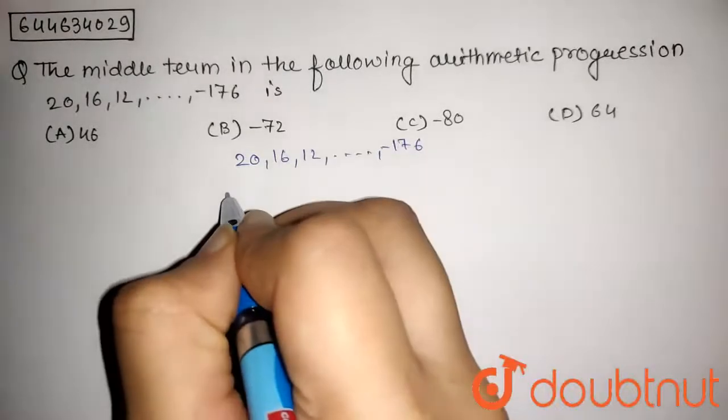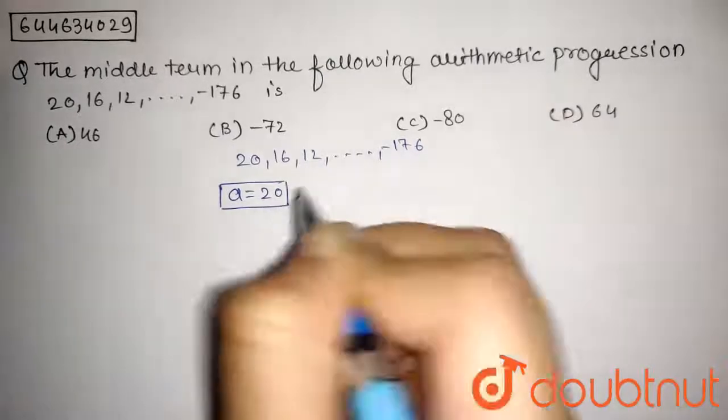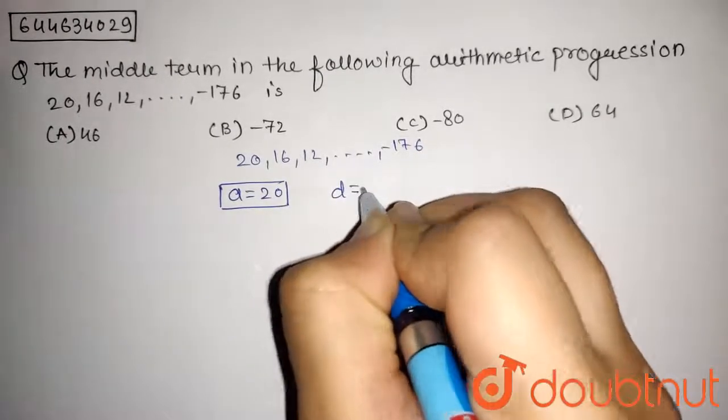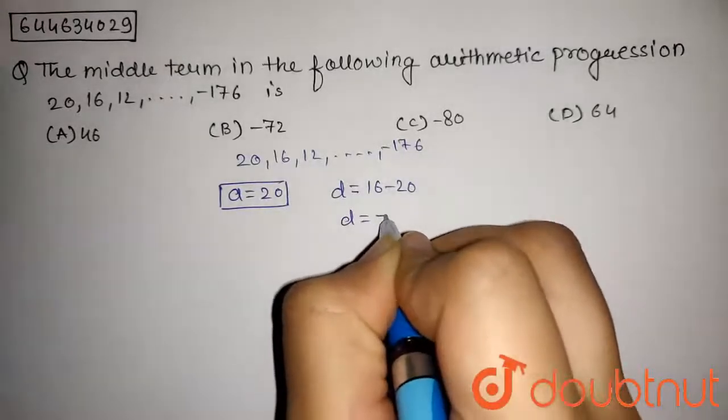Now from this AP we can write that a, the first term, is equal to 20. d, the common difference of this AP, will be 16 minus 20, that will be d is equal to -4.